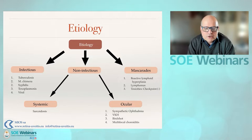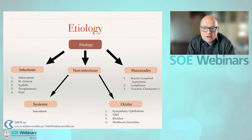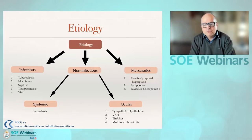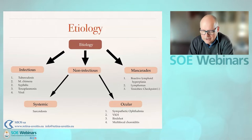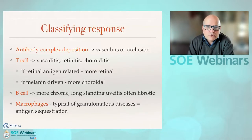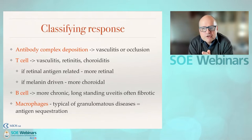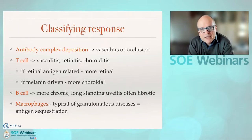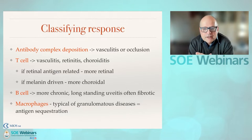Within the non-infectious, there are systemic causes such as sarcoidosis, and there are those that are purely ocular — for example, VKH, sympathetic ophthalmia, birdshot, or multifocal choroiditis. It's also useful to classify the immune response. Antibody complexes cause vasculitis or vascular occlusions. T-cells can give you vasculitis, but also choroiditis or retinitis, depending on the type of antigen.